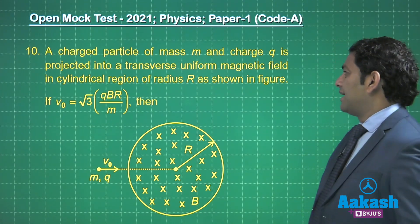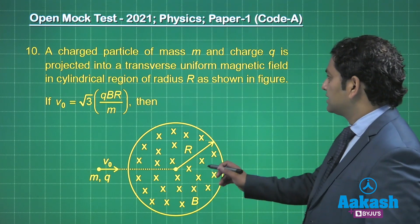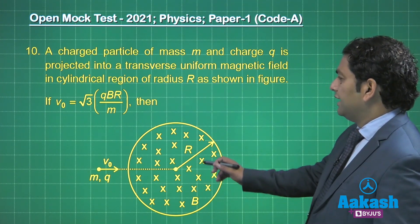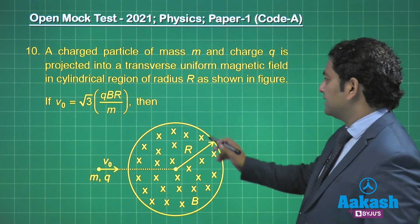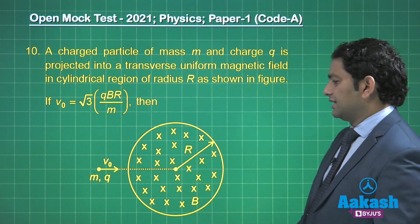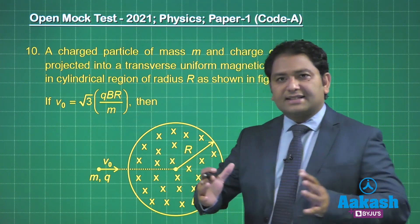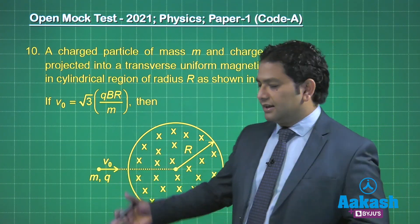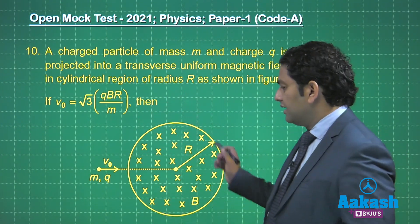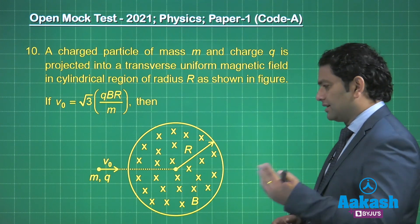A charged particle of mass m and charge q is projected into a transverse uniform magnetic field in a cylindrical region of radius capital R, and it has been given with this velocity. Now you've got to understand this magnetic field is not extended till infinity. The cross section has been given here. This is present. Only the cross section is going to be the circular one.